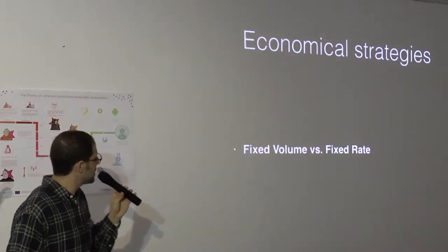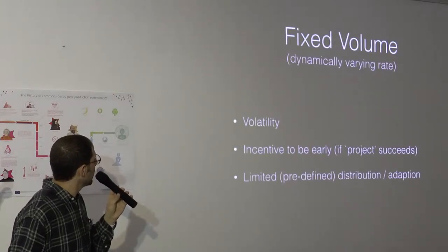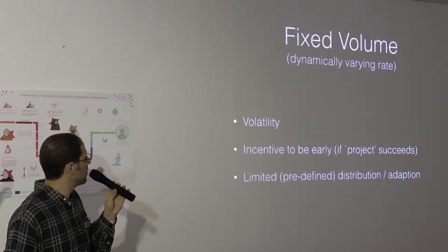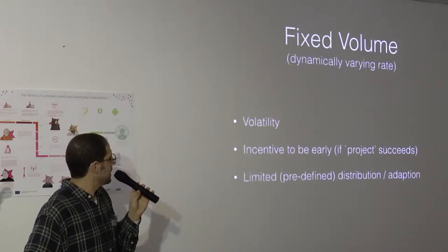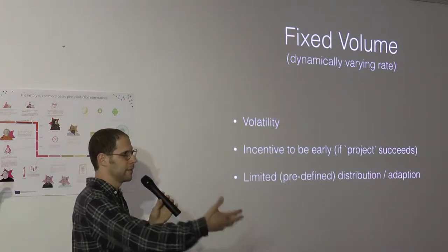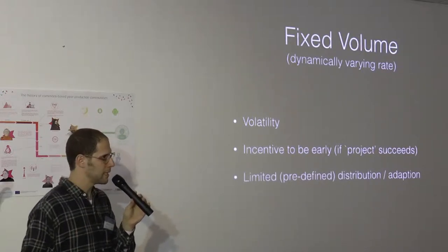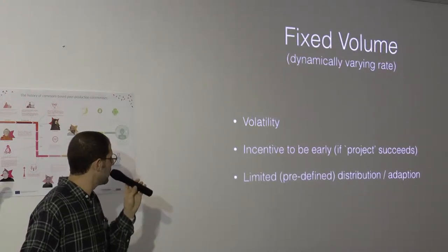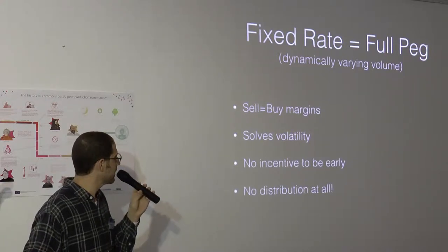We should have unlimited number of tokens supply distribution but without diluting the system too much, or at all. Which leads to a new kind of mechanism which we call partially pay mechanism. I have two minutes to tell you about that. So firstly, a fixed volume versus a fixed rate. This is the economy that we all know from the Bitcoin space, fixed volume economy with dynamically varying rate. It leads to high volatility. It's good because there is incentive to be early. If the project succeeds, demand increases. That's how we backwardly reward those early adopters. But there is limited distribution also. That's bad.